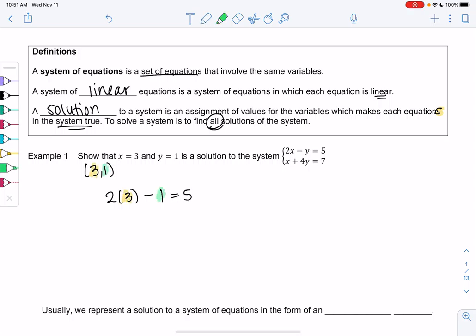So we'll go ahead and plug in 3 for x. So 2 times 3 minus y, so minus 1, equals 5. So x is 3, y is 1. Let's make sure they equal 5. So 6 minus 1, or 5 equals 5.